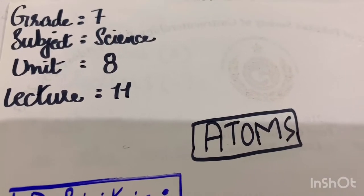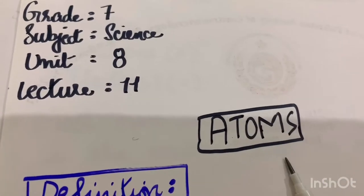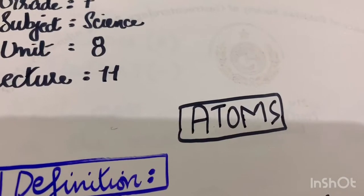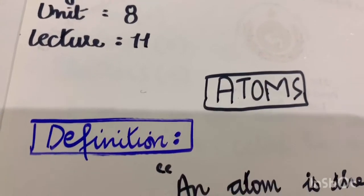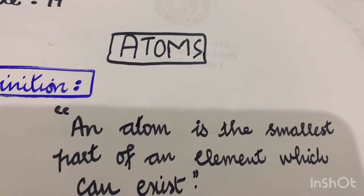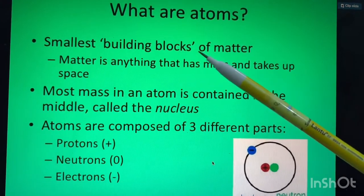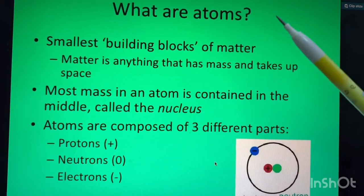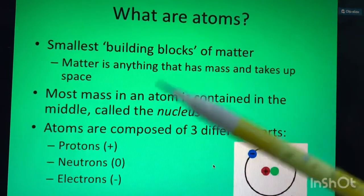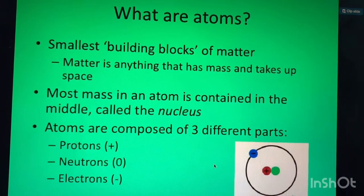Today we are going to do Unit 8, which is Atoms, for 11th grade Science, Grade 7. The definition of an atom: an atom is the smallest part of an element which can exist. Atoms are the smallest building blocks of matter. Matter is anything that has mass and takes up space. Most mass in an atom is contained in the middle, which is the nucleus.